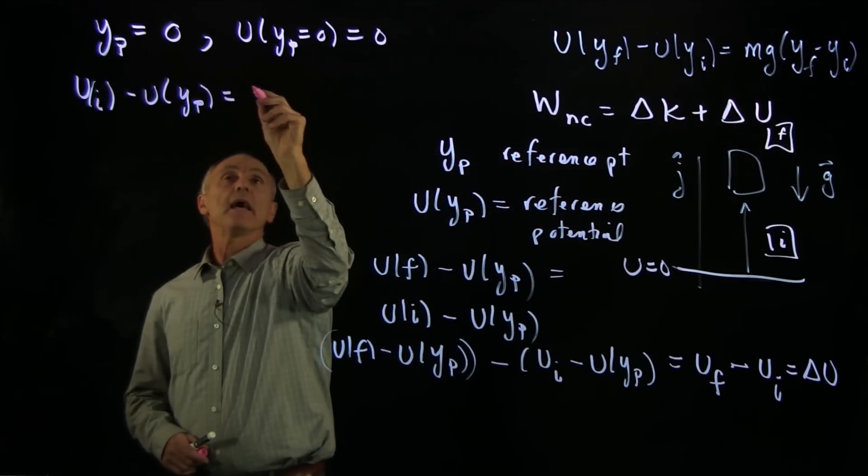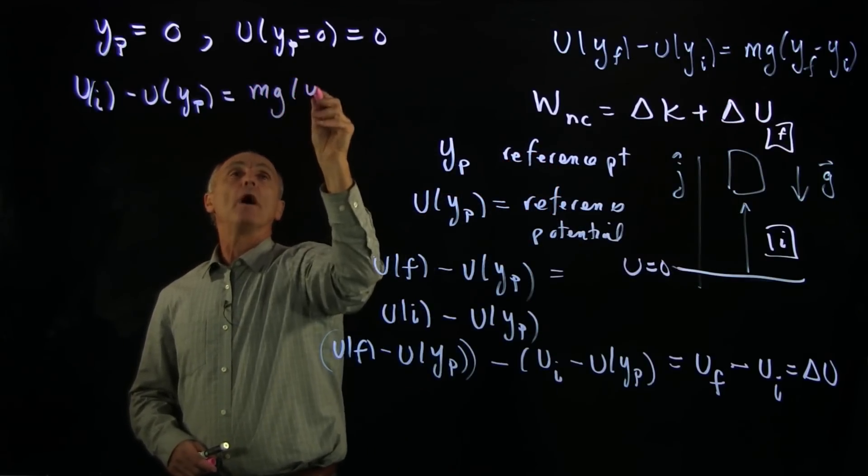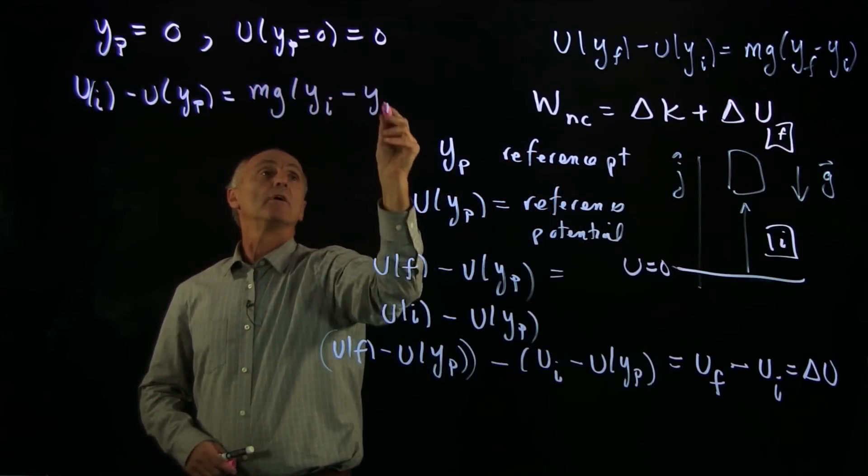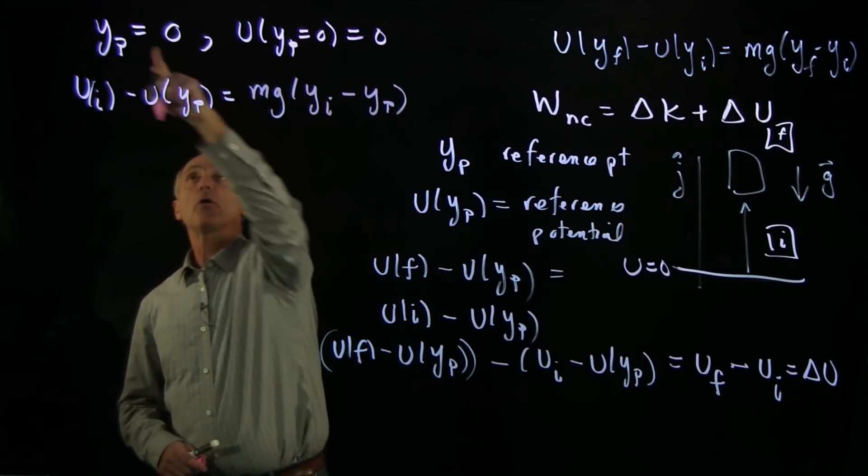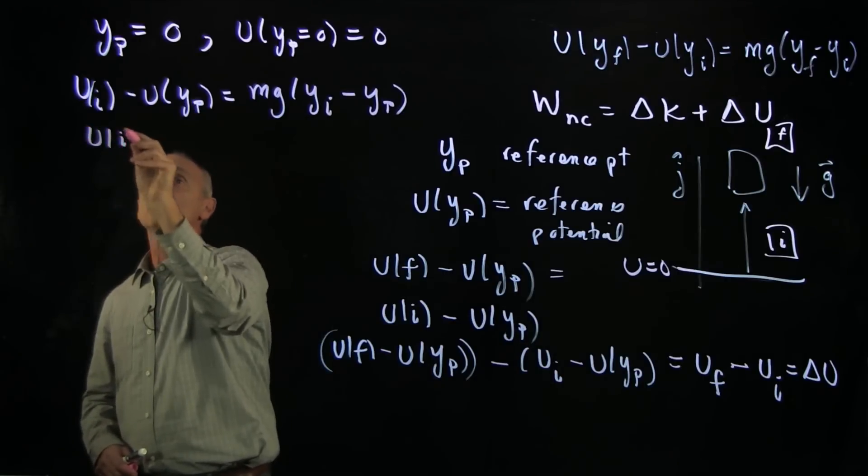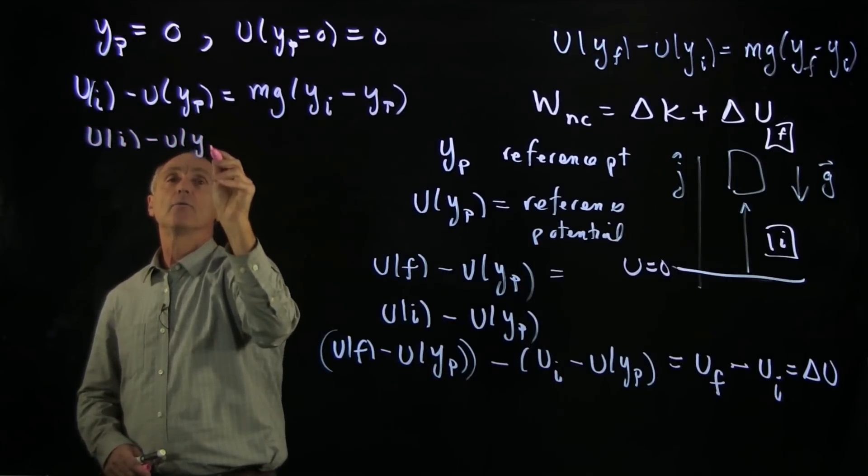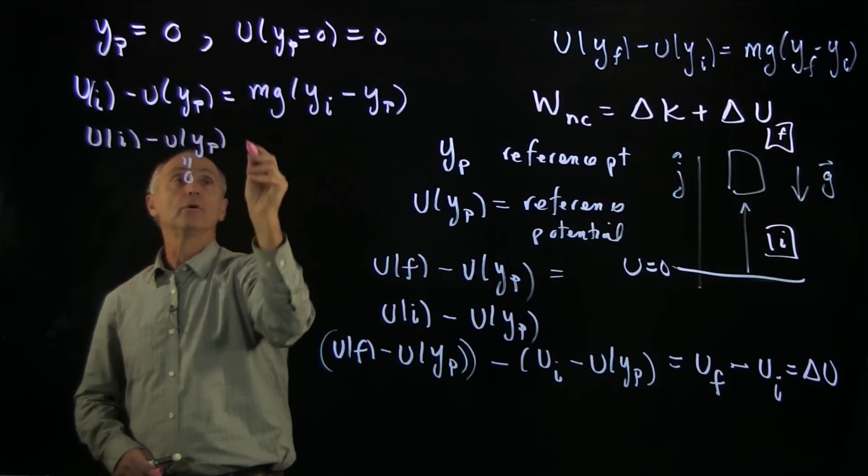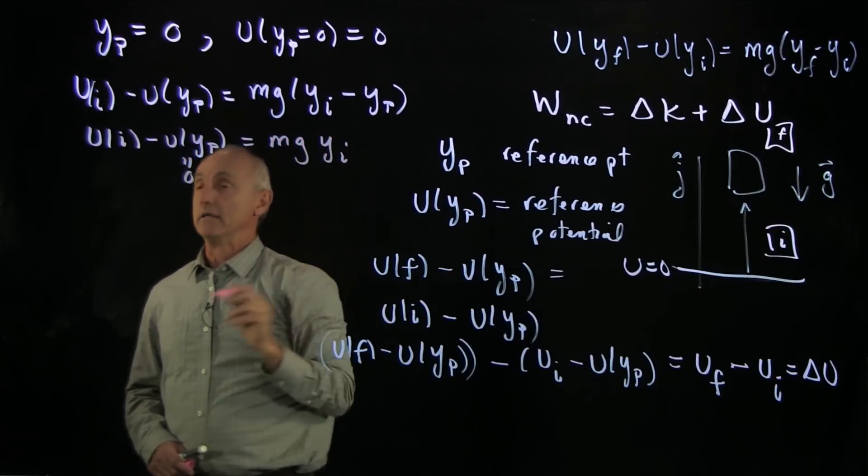So this is mg y initial minus the reference point. But our reference point was 0, and so we see that u initial minus y reference point, which was also 0, is just equal to mg yi.